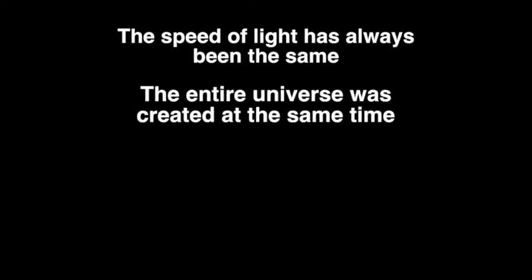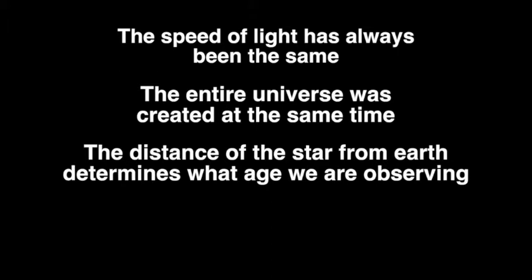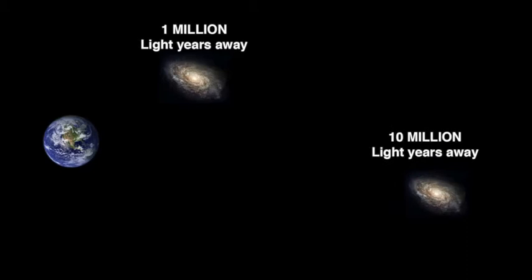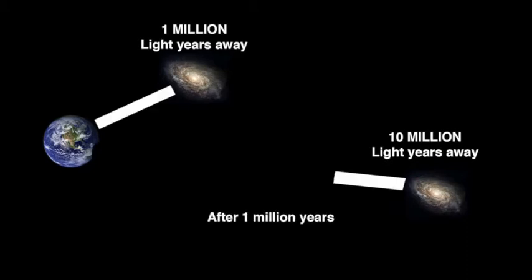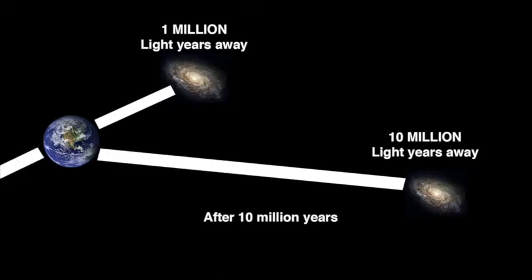Since we've determined that the speed of light has always been the same, and the universe was created all at the same time, then the distance of each star from the earth should determine what period of time we are observing on that star. For instance, the earth and two galaxies were created at the same time. Galaxy number one is one million light years away. Galaxy number two is ten million light years away. In exactly one million years, we would start seeing the light from galaxy number one. It would take another nine million years to see the light from galaxy number two. By then, we have already been watching galaxy number one age for nine million years. Although both stars were created at the same time, here on earth we are seeing a brand new galaxy, and a galaxy nine million years old.